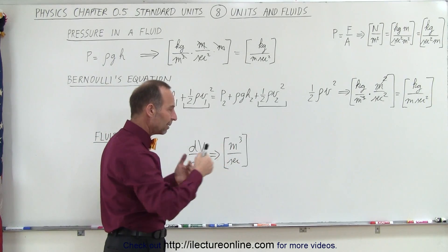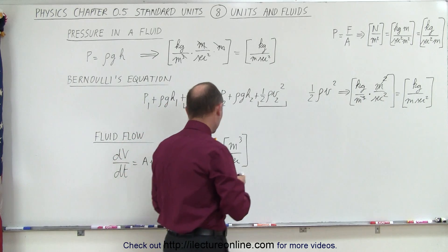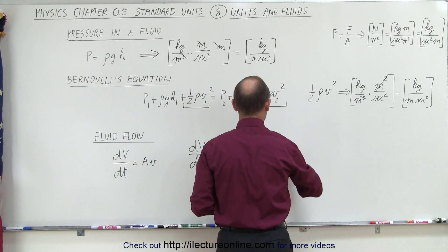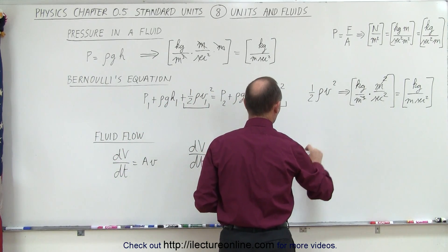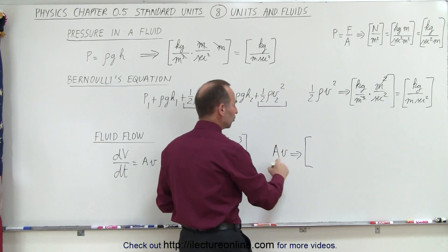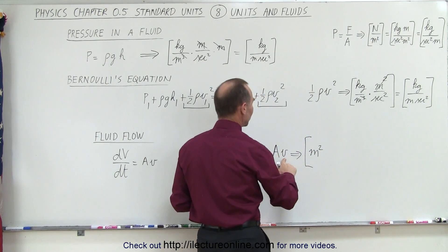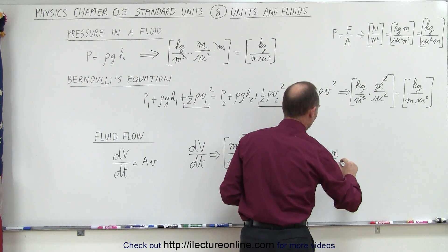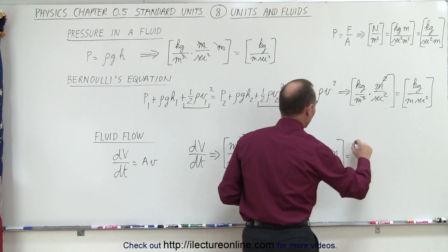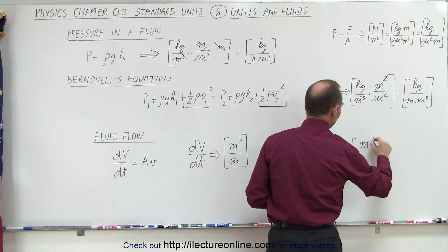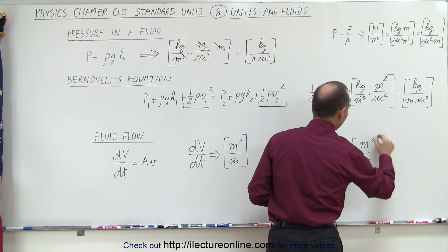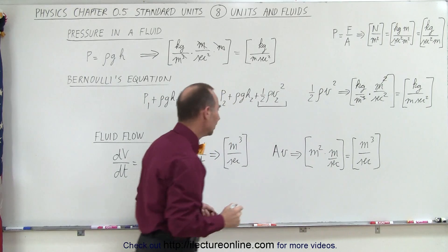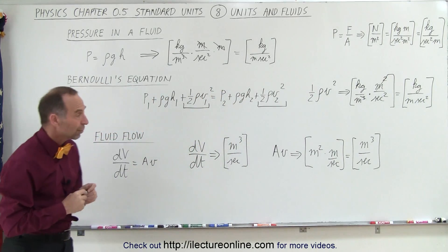Now what about A times V? A is the cross-sectional area of the pipe. V is the velocity of the fluid flowing through the pipe. So A times V, units for area would be square meters, and for velocity, we get meters per second. And if we simplify that, we end up with the units of meters cubed per second. Again, that's the same as what we had over here, the amount of water in volume per unit time.